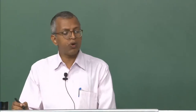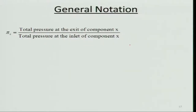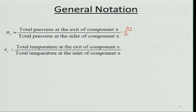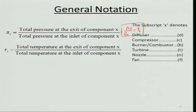For notation: the total pressure ratio of a component x is π_x = P_t,exit / P_t,inlet. The total temperature ratio is τ_x = T_t,exit / T_t,inlet. For example, for the compressor: π_c = P_t3 / P_t2. Subscripts used: d for diffuser (intake), c for compressor, b for burner/combustor, t for turbine, n for nozzle, and f for fan.